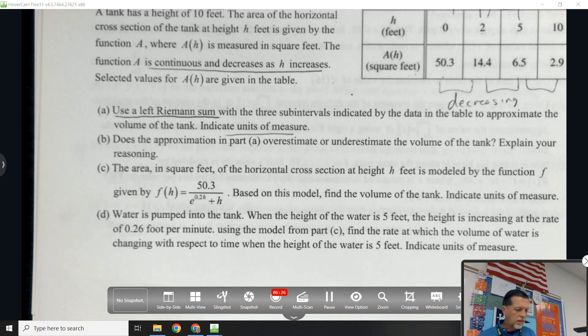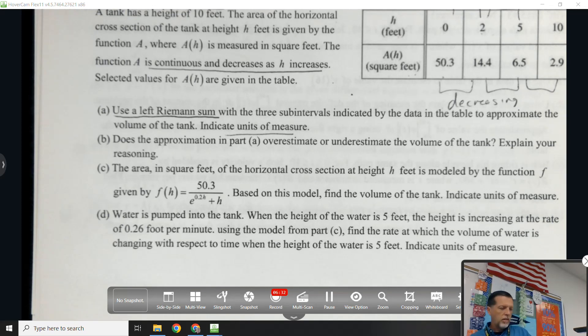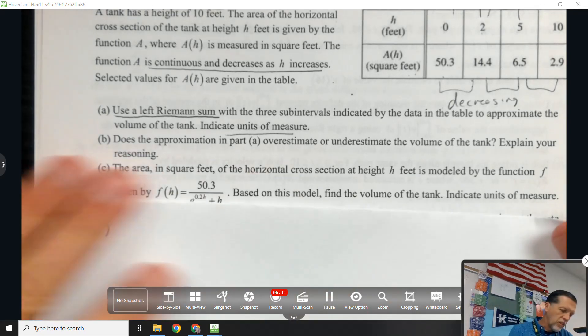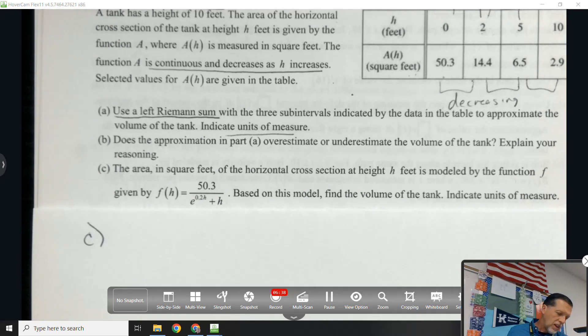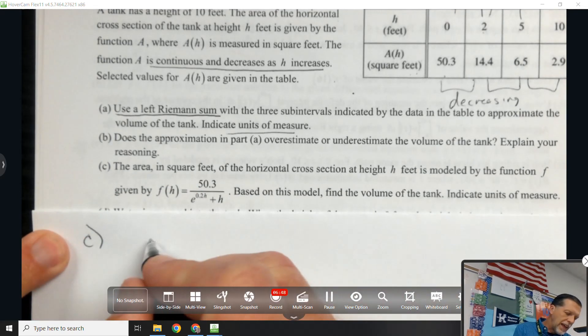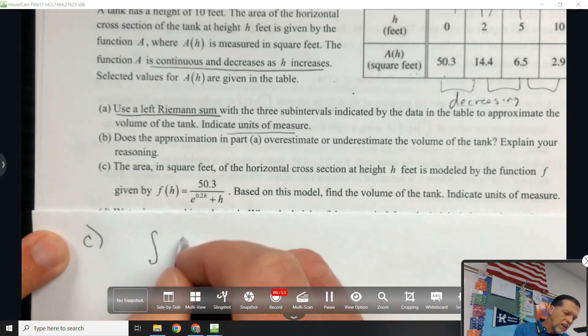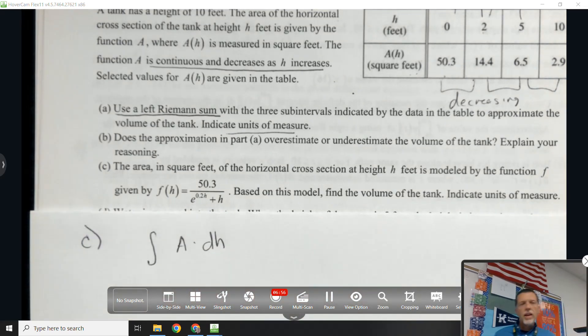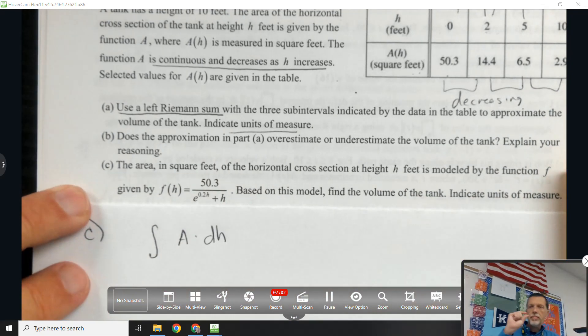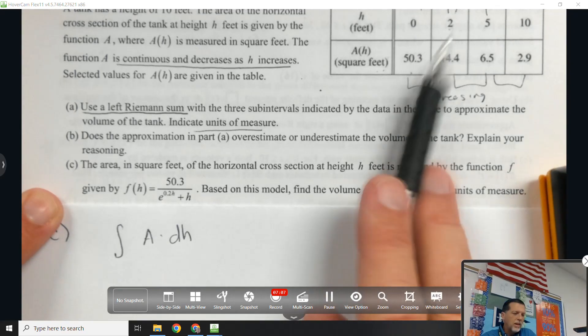Part C. Okay, everybody should get those two parts. That should be easy peasy right there. Hopefully that's enough to get us kind of on pace for a three. Part C. The area in square feet of the horizontal cross sections is modeled by the function, this thing. Based on this model, find the volume of the tank. Okay, so we've already thought about, we're integrating, let's see, this is the area times the height, or the little height, the piece of the height that goes with it. So when we had a table, we did the Riemann sum, now we've got a function.